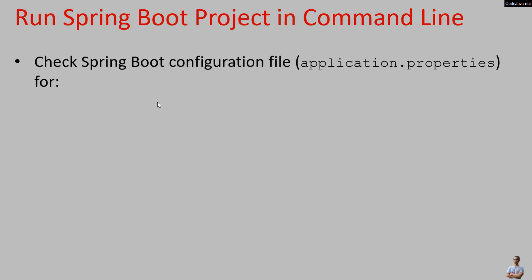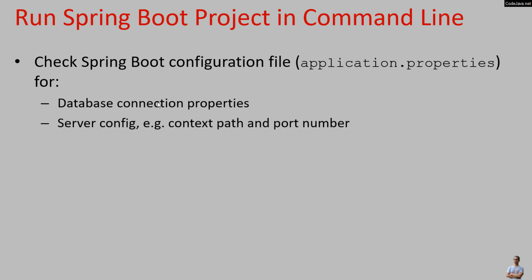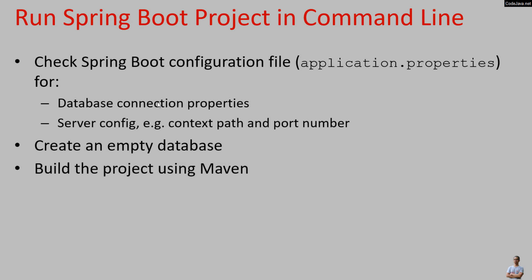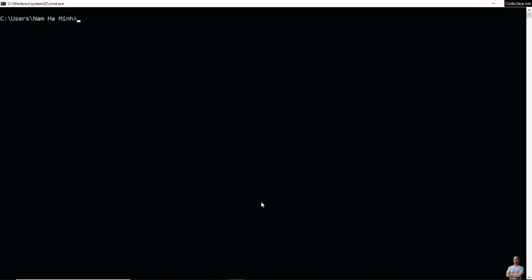Basically, here are the main steps for running a Spring Boot project in command line. Firstly, you need to check the Spring Boot configuration file — usually the application.properties file — for database connection properties and server config such as context path and port number. If the project requires a database, you need to create an empty database, then build the project using Maven, and run the project as a Java application.